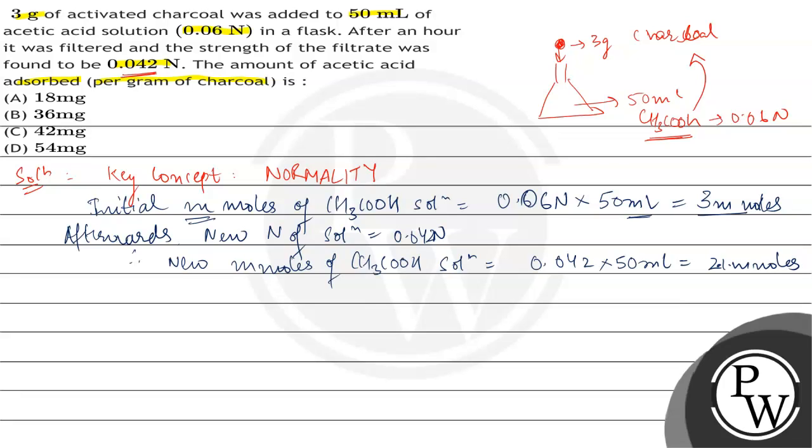That means initially solution had 3 millimoles and after 1 hour 2.1 millimoles remained. That means the amount of acetic acid absorbed on the surface is equal to 3 minus 2.1, that is 0.9 millimoles. You can convert this to moles by writing 0.9 multiplied by 10 to power minus 3 moles.